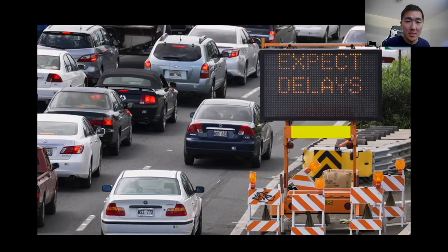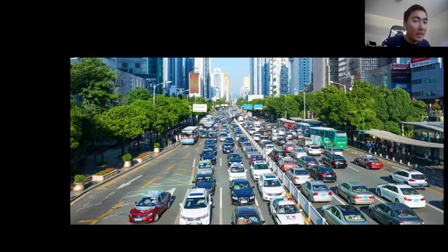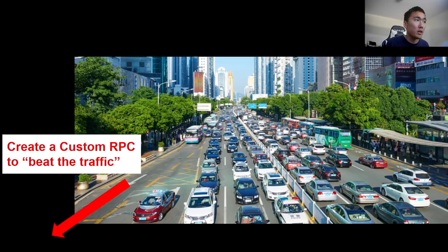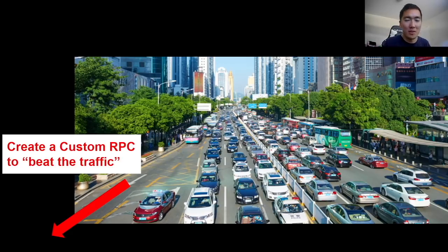If everyone at the same time is trying to use the road, the network might get congested and it might take some time to get your transactions through. So the idea of creating a custom RPC is let's beat the traffic by creating our own road. Let's just use our own single road that only I can use, so I don't have to deal with sharing a single road with everyone else adding to the traffic.